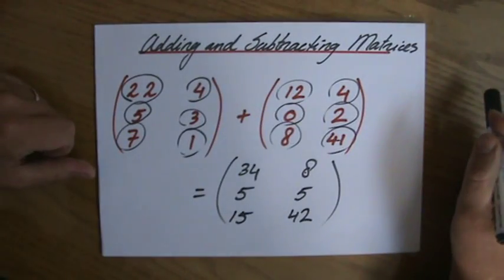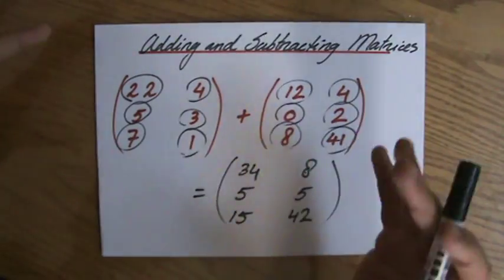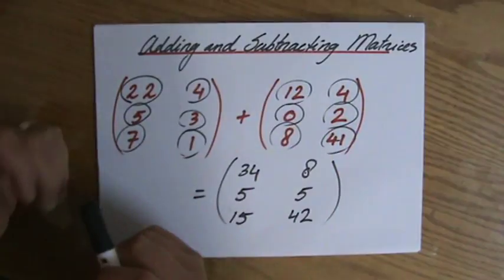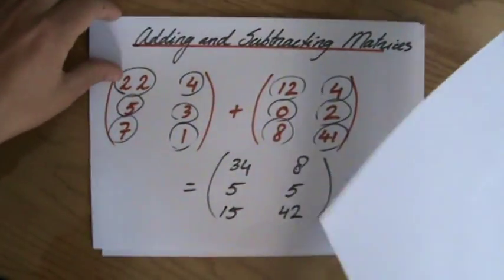So when you're adding and subtracting matrices, you add or subtract, depending on the question, each position with the same position in the other matrix. I'm going to give you another example very quickly.